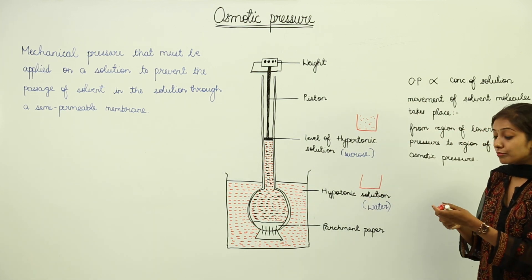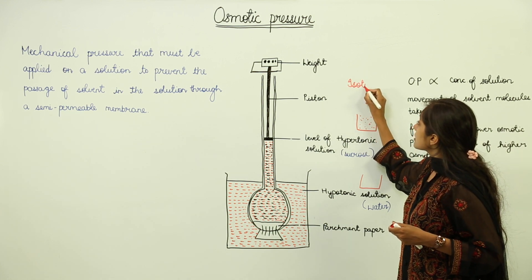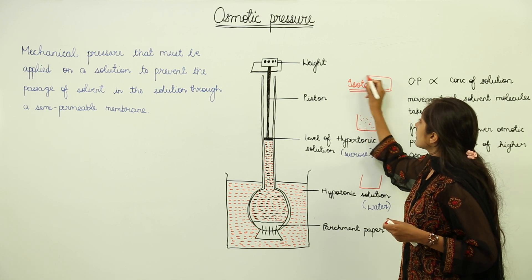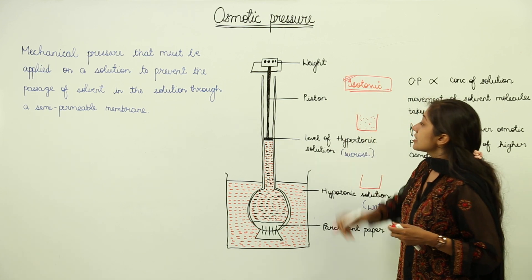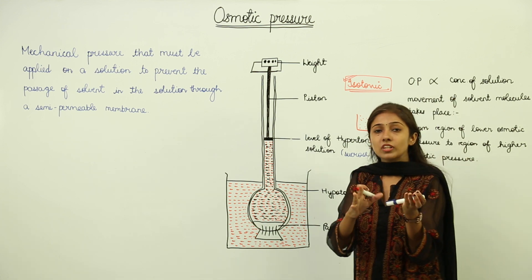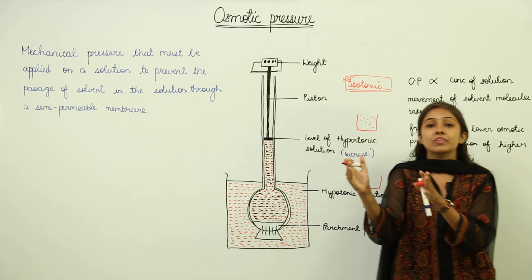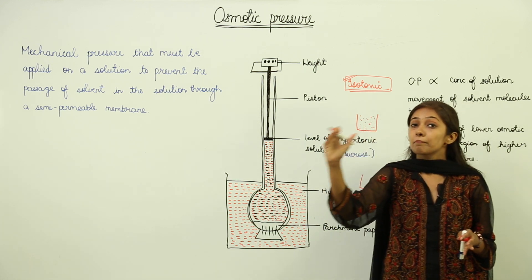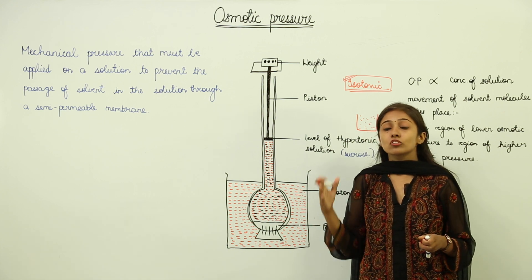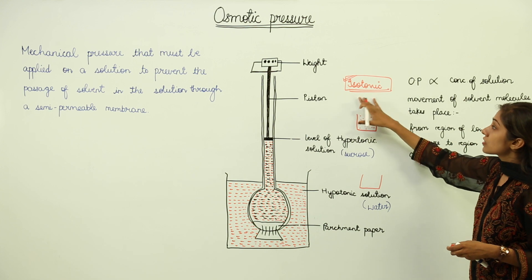We also have one more term, that is isotonic. Isotonic means when the solution is actually at the same osmotic pressure — when you talk about the external environment and the internal environment, both of them have the same osmotic pressure. So there will be no net movement of the solute particles or no net movement of water. That is an isotonic solution.